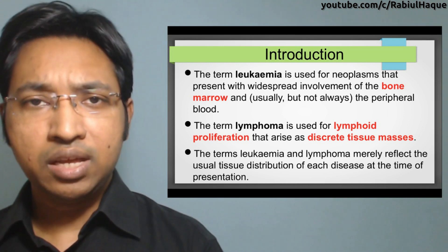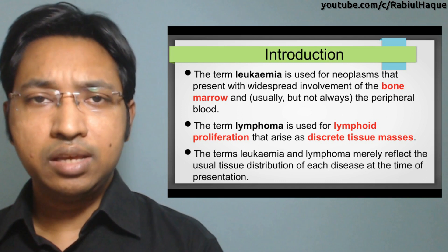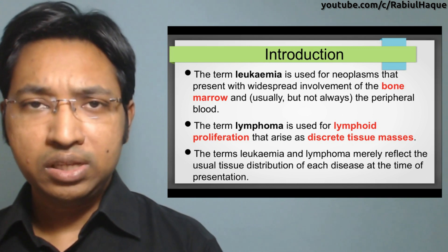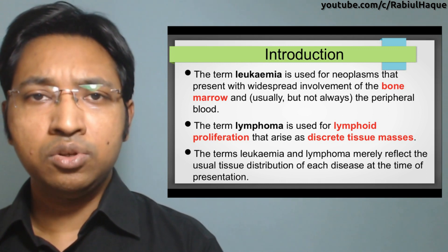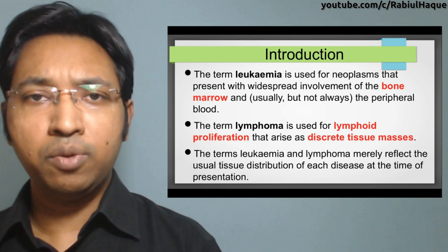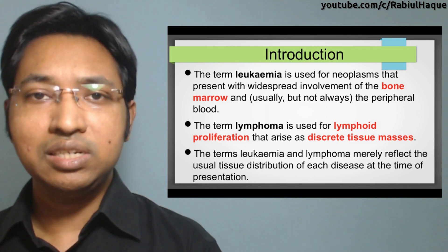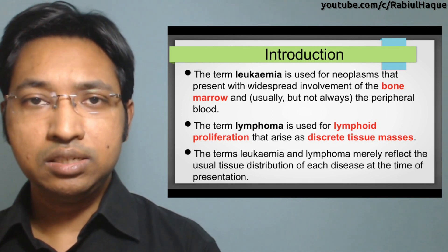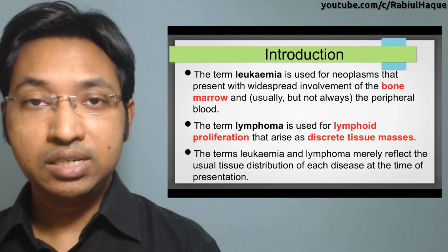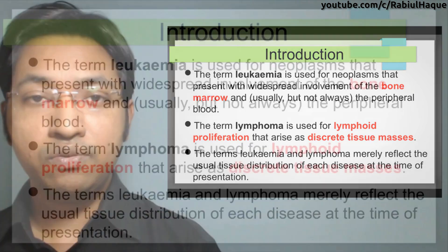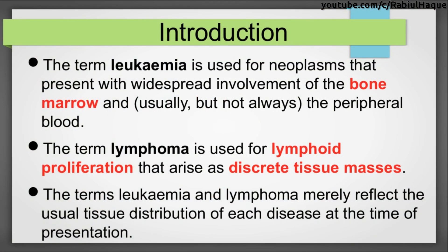Although in the past leukemia and lymphoma were considered distinct entities, with increased understanding the divisions have now blurred, and these two terms merely reflect the usual tissue distribution of each disease at the time of presentation.